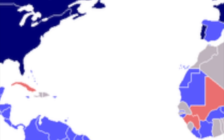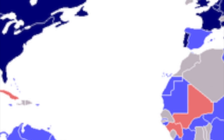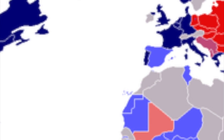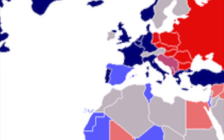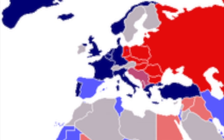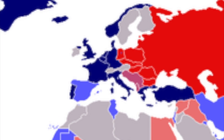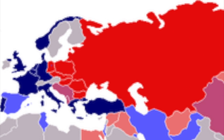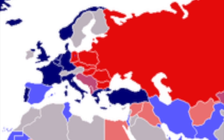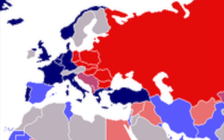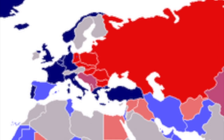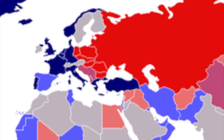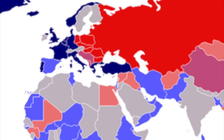Whenever you look at political maps of the world, especially historical maps, you might notice huge clusters of different states all governing very closely and similarly to one another, often with one powerful country commanding them all. These smaller states are often classified under one of the game of politics's most well-known classifications: puppet states. So, what is a puppet state, and what does it mean to be in this kind of relationship?